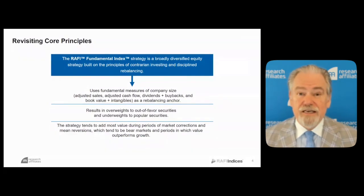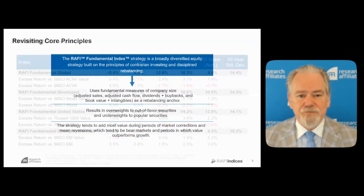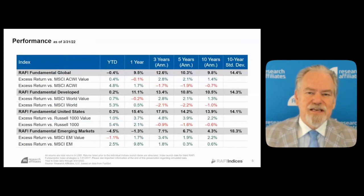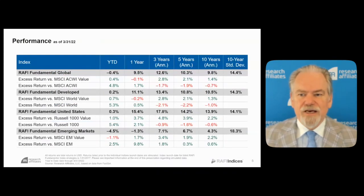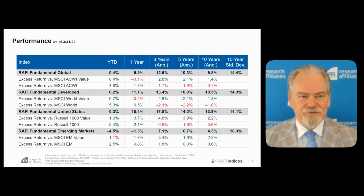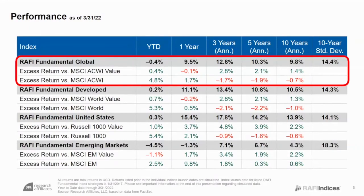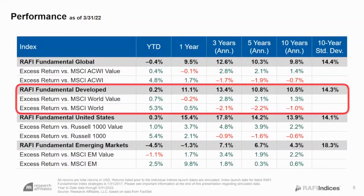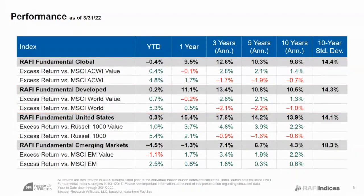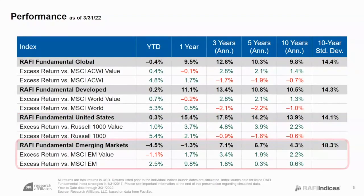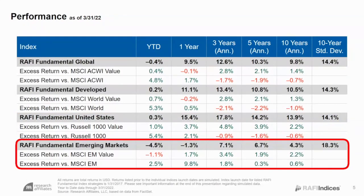You can see that in this table showing RAFI performance going back over 1, 3, 5, and 10 years, and year-to-date. Globally, against value, we've added value over all spans except for one year with a 10 basis point shortfall. For developed markets, we've outperformed value over all spans except a slight shortfall over one year. For the US, all spans. For emerging markets, all spans except the current year-to-date, and we'll come back to that.